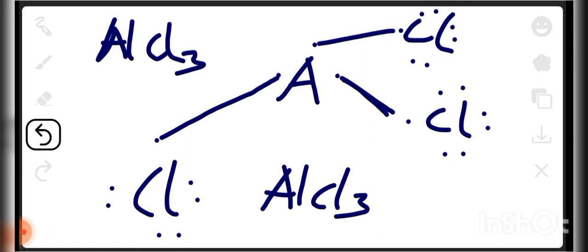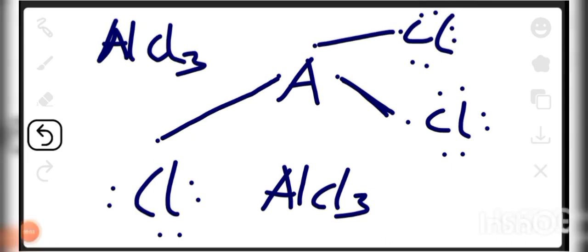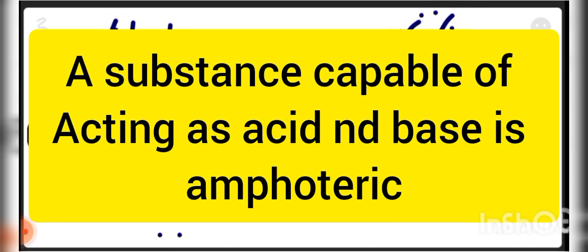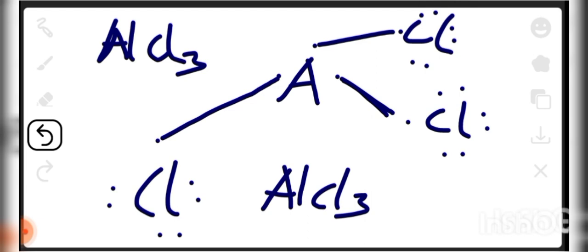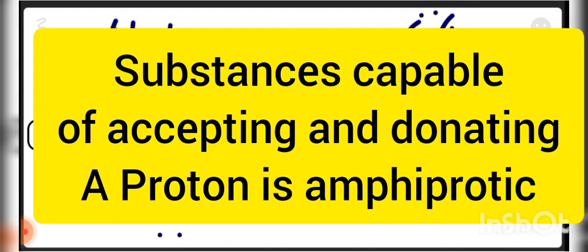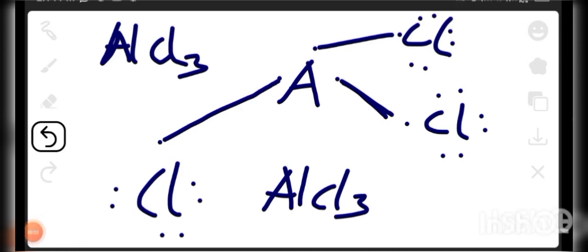Remember: something that can donate a pair of electrons is a Lewis base, and something that can accept a pair is a Lewis acid. Also note that we have amphoteric substances — substances that can act as both an acid and a base. Water is an example of an amphoteric substance. An amphoteric oxide can act as both an acidic oxide and a basic oxide. Something that can both accept and donate a proton is called amphoteric.